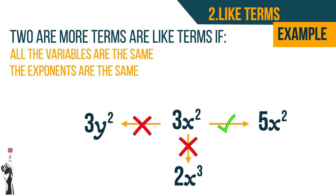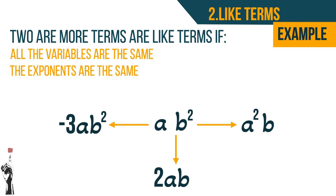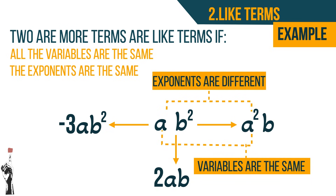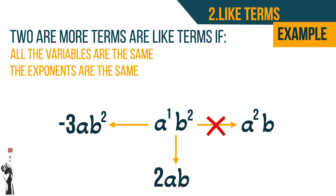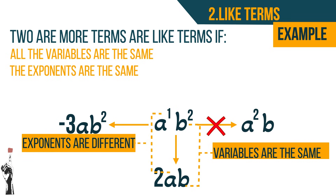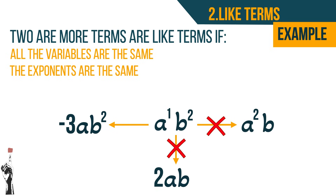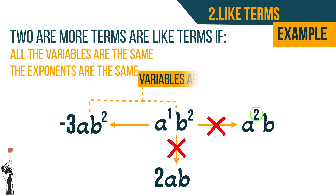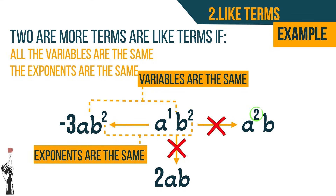Next example: ab squared. Compared to a squared b — even though the variables are the same, the exponents differ (exponent on a is 1 in ab², but 2 in a²b), so they're not like terms. Compared to 2ab — the variables are the same but the exponents differ, so not like terms. Compared to negative 3ab squared — the variables are the same and both a's have exponent 1 and both b's have exponent 2, so negative 3ab squared and ab squared are like terms.